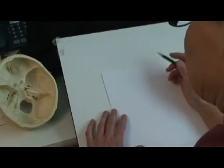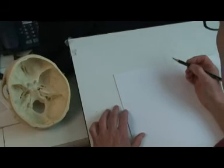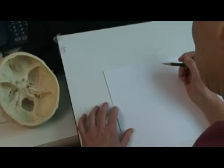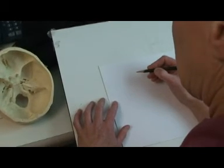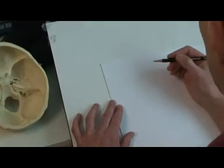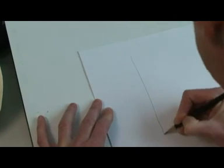Then we're going to find the foramen on our grid. Using the foramen as guides, we're going to be able to draw the outline of the temporal bone and then the structures within the temporal bone. So I'm going to draw just a basic grid.